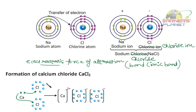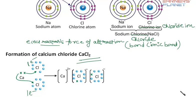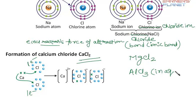Likewise, calcium chloride is also formed. Calcium loses its two electrons — one is gained by one chlorine atom and the other by another chlorine atom — forming Ca2+ and two Cl− ions. The electrostatic force of attraction between these oppositely charged entities gives calcium chloride. Similarly, magnesium chloride and aluminium chloride are ionic compounds formed in aqueous medium. Note that AlCl3 in dry or gaseous phase is actually a covalent compound.